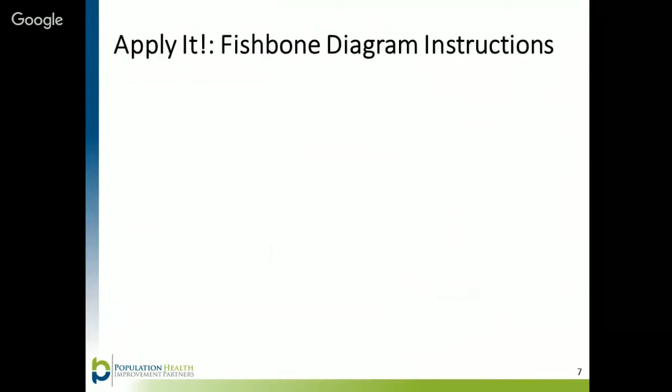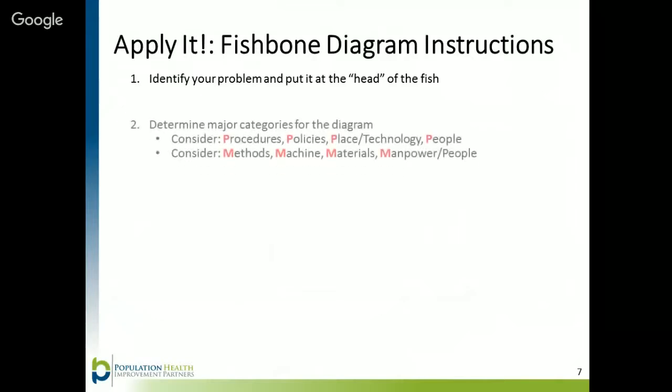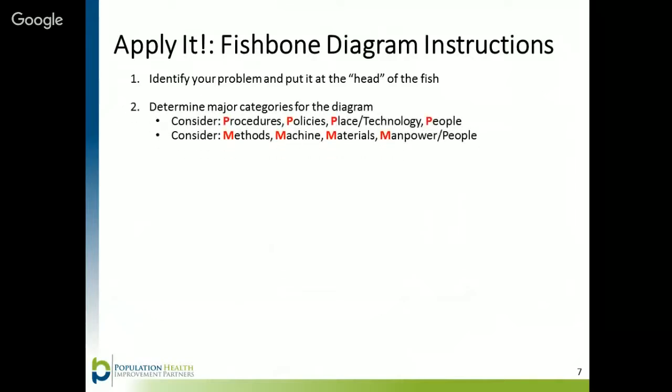Let's review the steps for using the Fishbone Diagram. The first step is to identify your problem and put it at the head of the fish. The second step is to determine the major categories you want to use: either the four P's — procedures, policies, place or technology, and people — or the four M's — methods, machine, materials, and manpower or people.